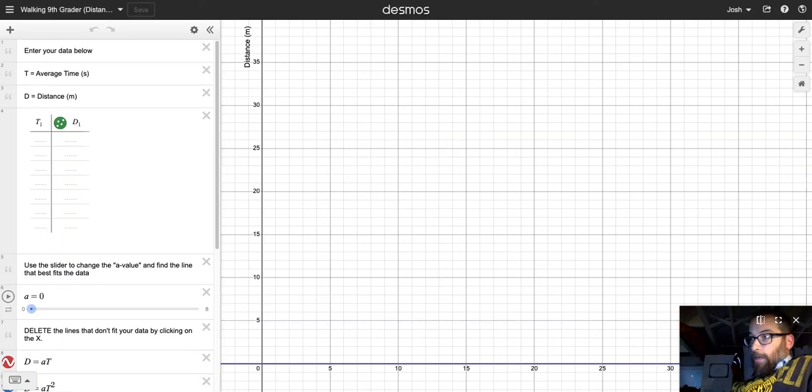All right scientists, in this video I want to show you how to graph something using Desmos. What you can see here is the walking ninth grader template. If you click the link in the 'How Fast is the Ninth Grader' assignment, you will see this.